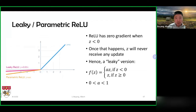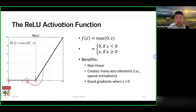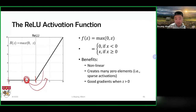A problem with ReLU is that sometimes when you do gradient descent and drive your input value below zero, that unit may not be able to recover from that position, because the gradient is zero there. The output would not receive any gradient, making it difficult to pull it back from that region to the positive region.